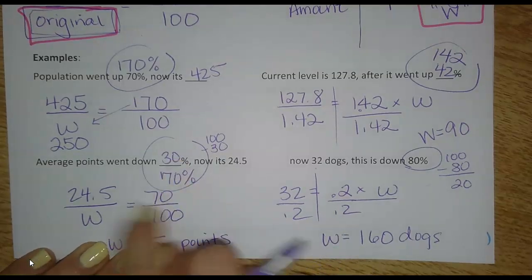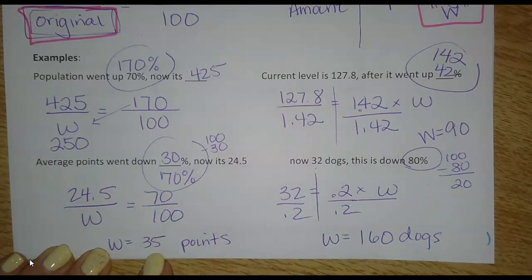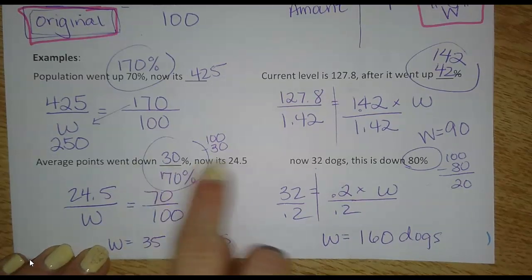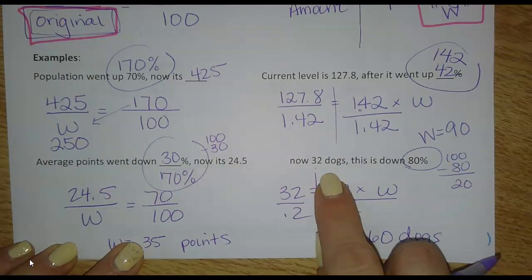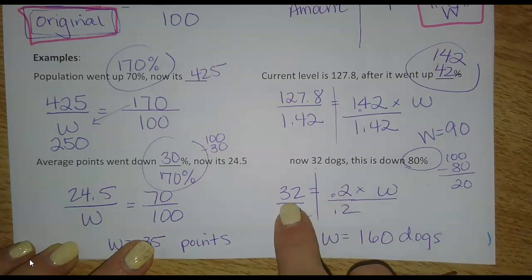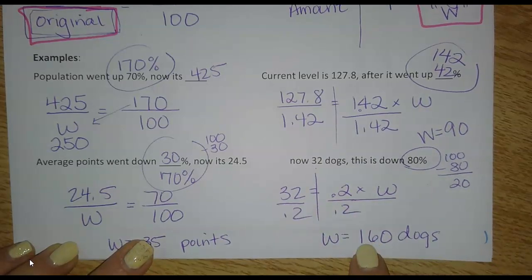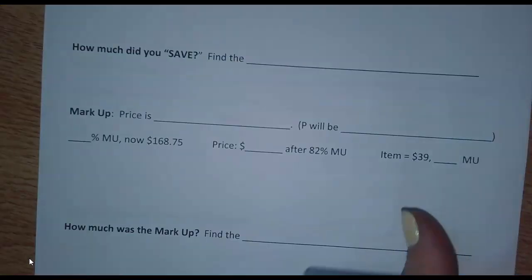So I put my 70 in here for P. New amount goes there. Cross multiply, and I got 35. So it was at 35, went down 30%. Now it's at 24. Seems right. All right. This one, I put in 0.2 into my equation for 20%. And now it's at 32. It started at 160. But it's gone down by 80%. Brings me to 32. Let's turn the page and keep going.